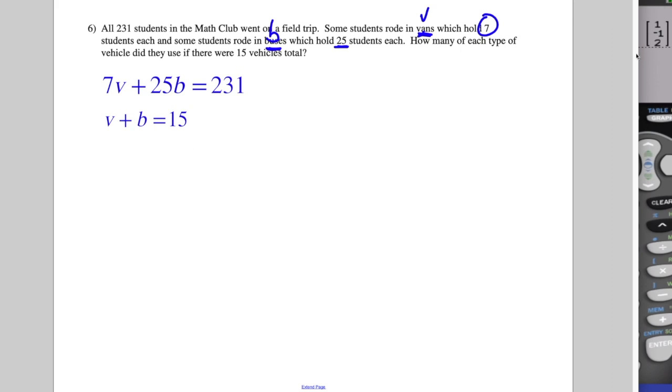Now if I were to do this by hand, this is a 2 by 2. I would have my coefficients as 7, 25, 1, and 1. And then I would have V and B.